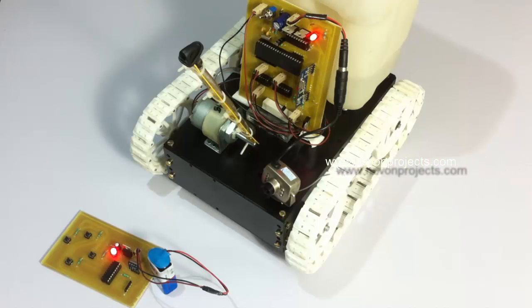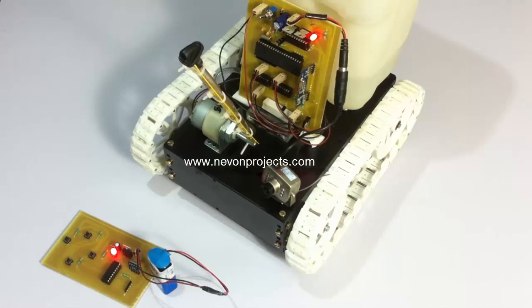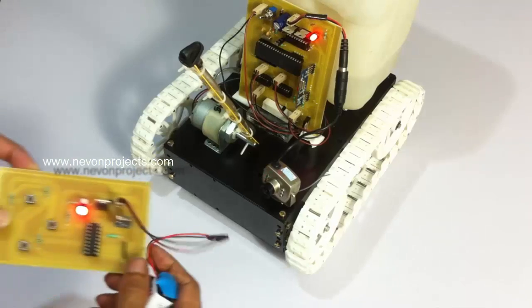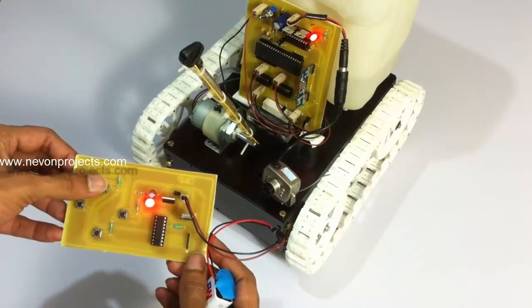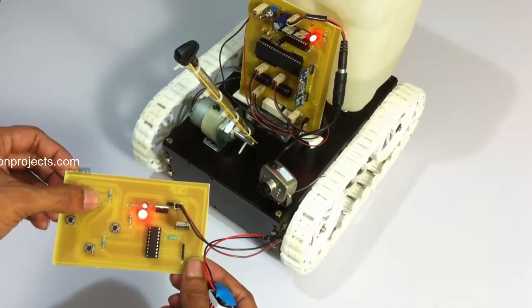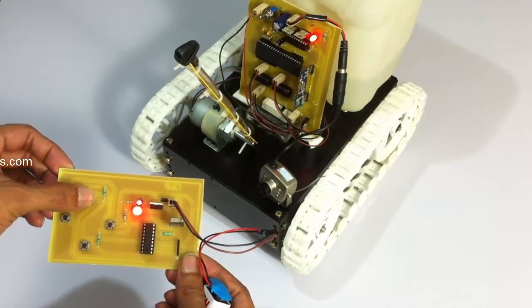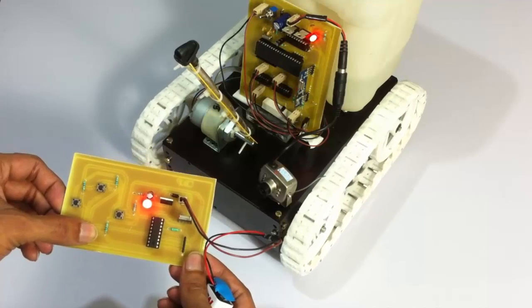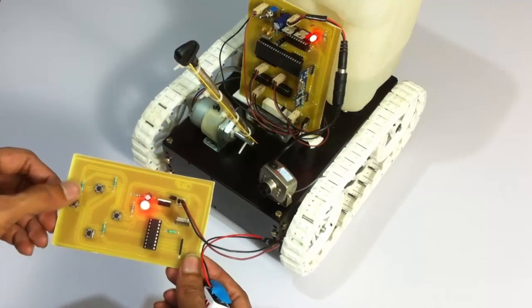Let's see how the system works. Let's first use this remote control to check the vehicle motion in forward, backward, and left-right directions. Now let's see its movement in forward direction, now similarly backward, and now left and right.